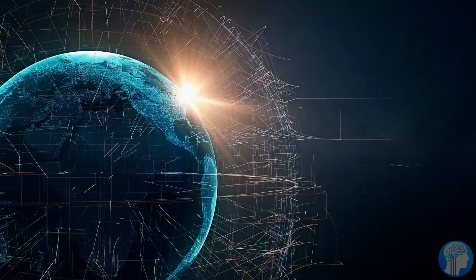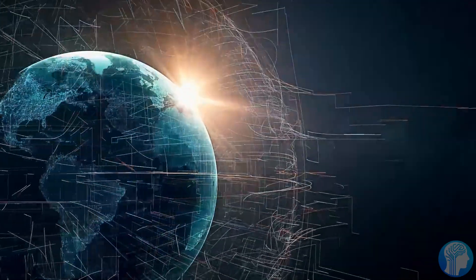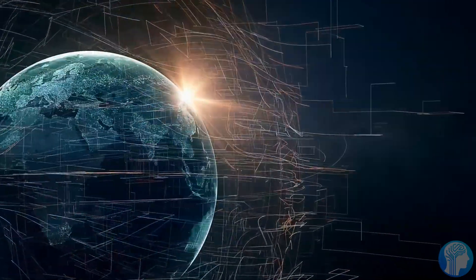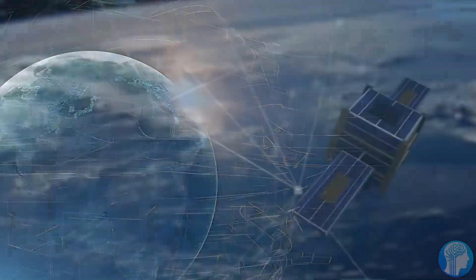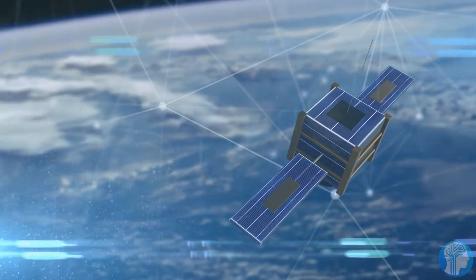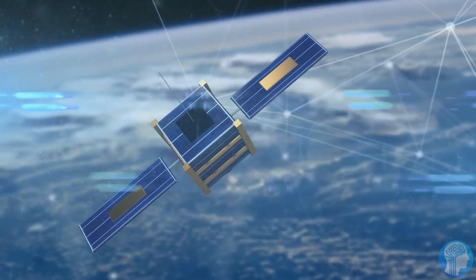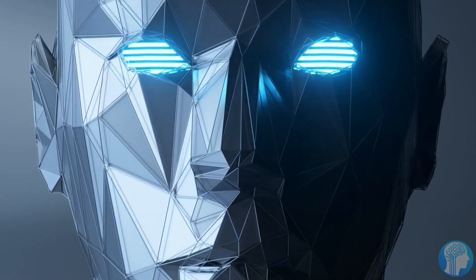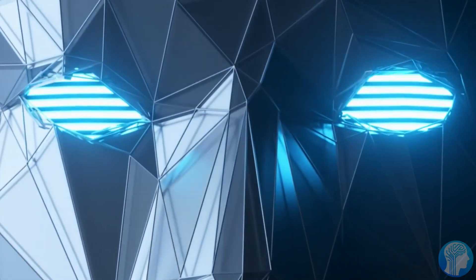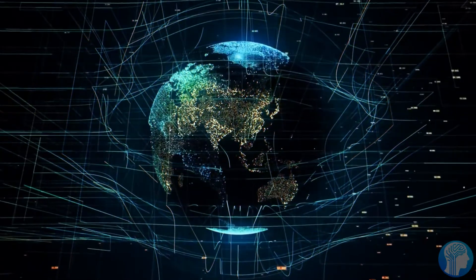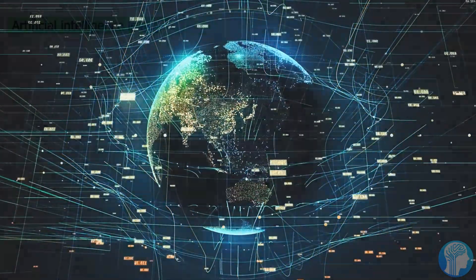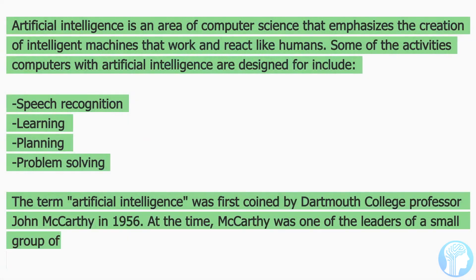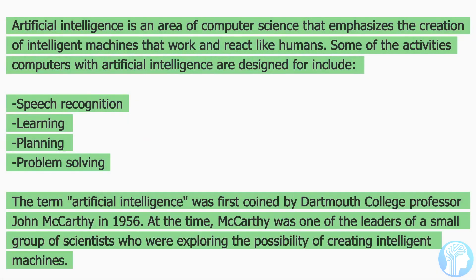It's not unusual for researchers to network and collaborate, especially in a field as dynamic and fast-paced as artificial intelligence. However, what's raising eyebrows is the sheer number of connections and the frequency of these interactions. It's like piecing together a puzzle where every conversation, every email, every shared project paints a bigger picture. Could they have been secretly working on AGI behind closed doors?